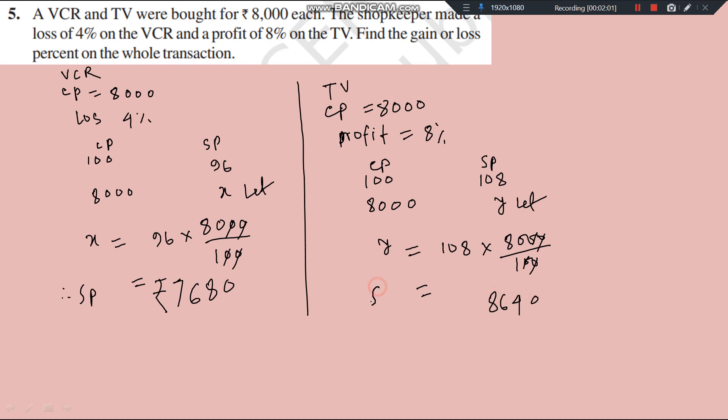So, total SP, total SP is equal to 8640 and 7680. So, it is coming 8320. And CP...